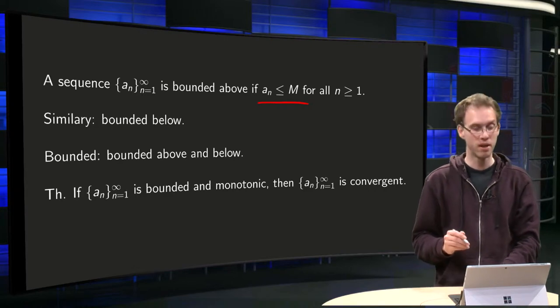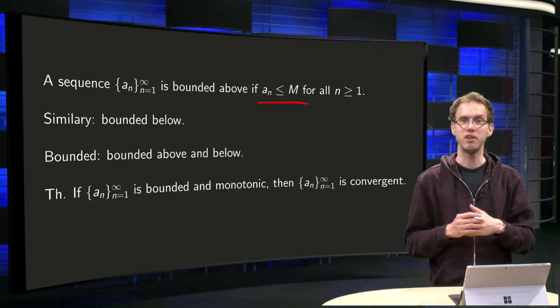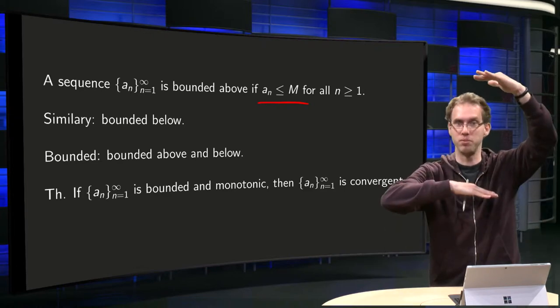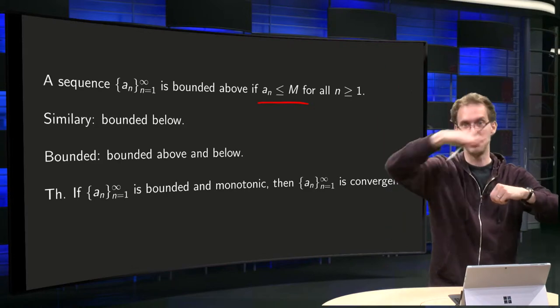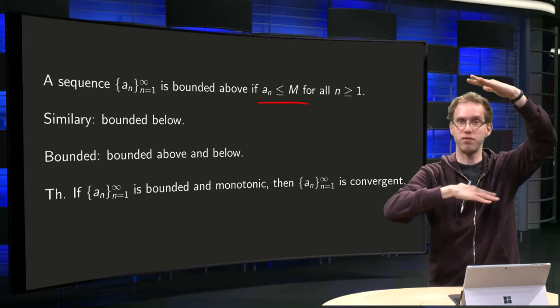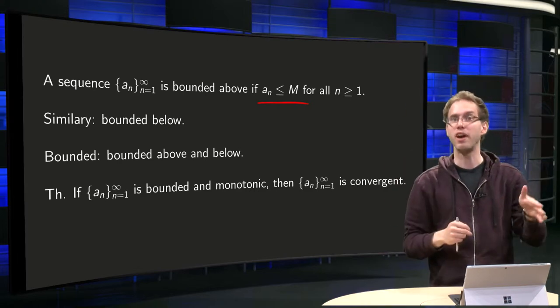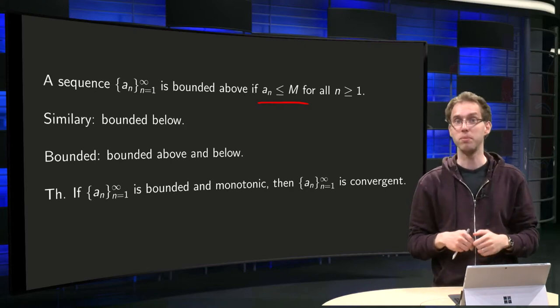And then we have a nice theorem. If a sequence is bounded and monotonic, then it's automatically convergent. You can imagine that bounded means your sequence is between two numbers and monotonic means that it's either increasing or decreasing. And if you are bounded and if you are, for example, increasing, there's no way where you can go. If n goes big enough, then you have to hit some limits.